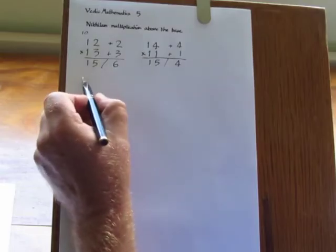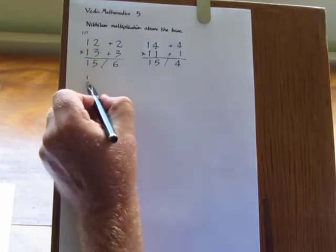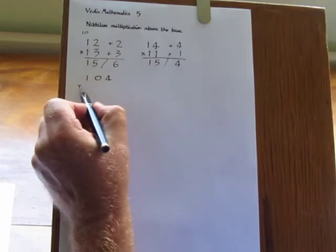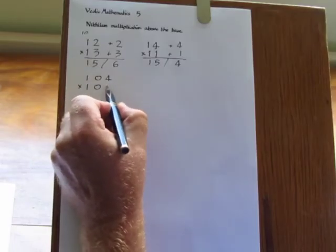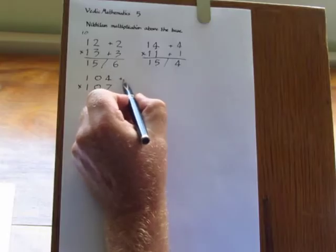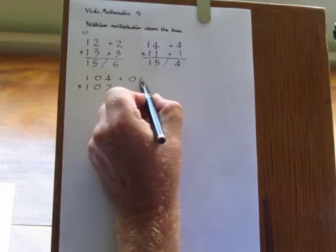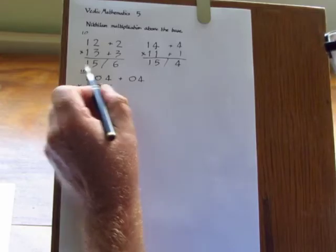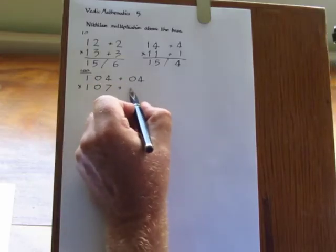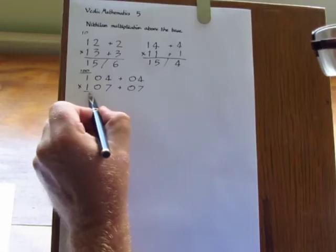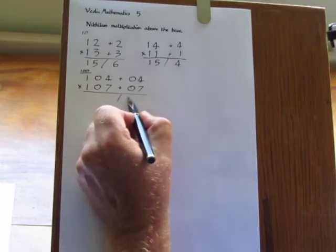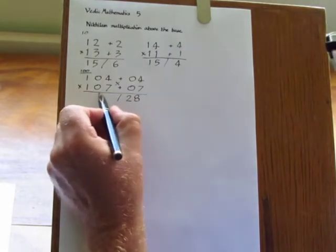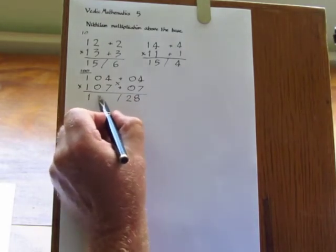And we can apply this to numbers which are close to and above 100. So for example, 104 times 107. This time we leave two digits on the right hand side because the base 100 has two zeros. And here we have 04 and 07. Multiply on the right to give 4 times 7 equals 28. And then cross add on the left to give 111.